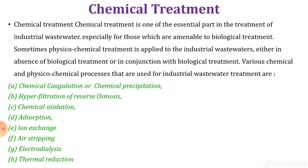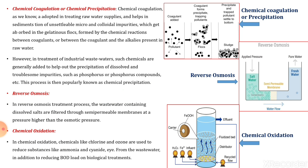Let us see each process in detail. Chemical coagulation, as we know, is adopted in treating raw wastewater supply and helps in sedimentation of unsettleable micro and colloidal impurities, which get absorbed in the gelatinous floc formed by the chemical reaction between the coagulant and alkalis present in the raw water. In the treatment of industrial wastewater, such chemicals are added to help the precipitation of dissolved and troublesome impurities such as phosphorous compounds. This process is then known as chemical precipitation.